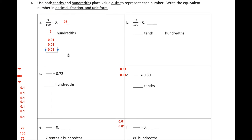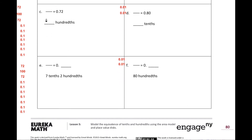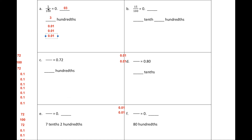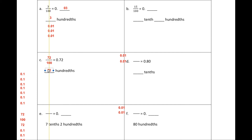Now I'm going to move on to letter C. If I already have the decimal form, let's see how we can write it in fraction form. How many hundredths do I have? I have 72 hundredths. What number goes on the bottom? The hundredths. If I had three on top and three hundredths, how many hundredths do I have here if I have 72 on top? I have 72 hundredths.